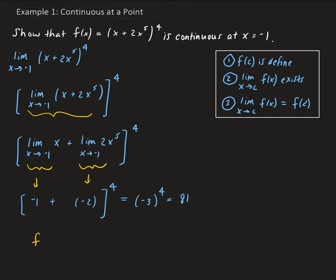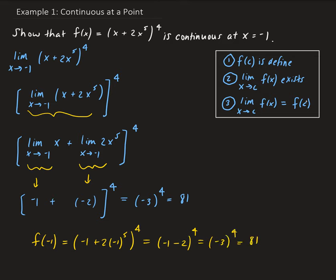Now we check that the function evaluated at negative 1 also equals 81. We have negative 1 plus 2 times negative 1 to the fifth, all raised to the fourth power. Negative 1 to the fifth is negative 1, so we have negative 1 minus 2 raised to the fourth power, which is negative 3 to the fourth power, and that gives us 81.